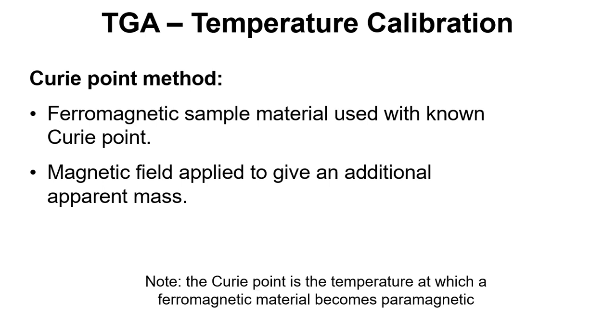We put that in the TGA instrument and apply a magnetic field to give an additional apparent mass on the mass reading. The magnetic mass is lost at the Curie point.